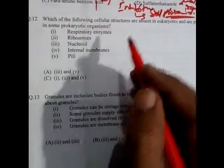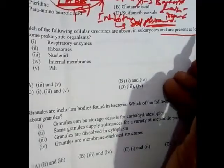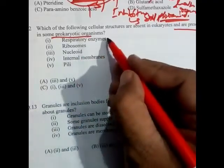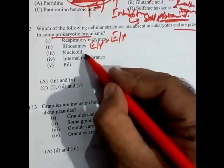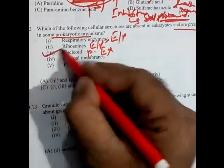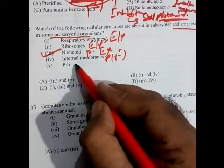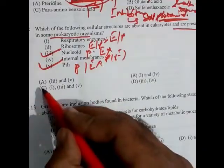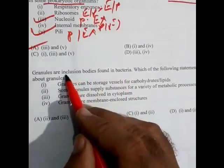Question 12: Which cellular structures are absent in eukaryotes but present in at least some prokaryotes? Ribosome is present in both, so not the answer. Nucleoid is present only in prokaryotes — absent in eukaryotes — so that is one correct option. Internal membrane is also present in prokaryotes but not eukaryotes. So the answer is the third and fifth options.